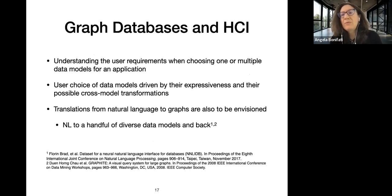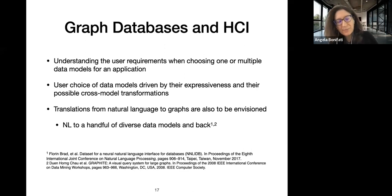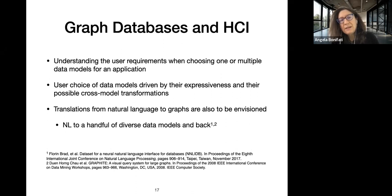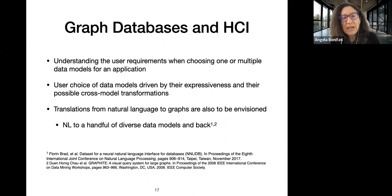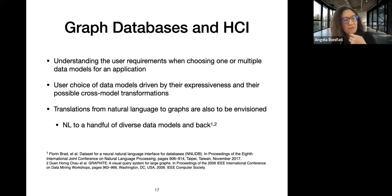Now we have the idea of what property graphs are, and the user viewpoint is also very important. When you choose a data model like the property graph used in Neo4j or Oracle, the user specifies requirements and you must understand those requirements when choosing a data model for a use case. The lattice helps users understand cross-model transformations. Another important topic for other communities — NLP — is how to translate from natural language to graphs and back.